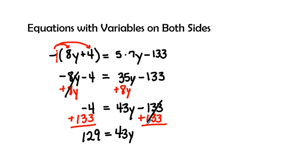This is going to turn out to be 0. So I'm going to divide by my coefficient by 43. And 43 times 3, so my answer is going to be y equals 3.